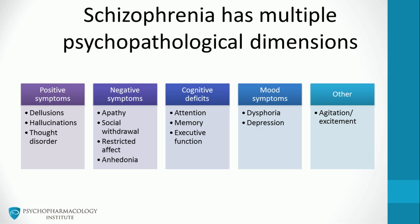Some authors include the psychopathological dimension of agitation and excitement. As you can see, schizophrenia psychopathology is quite complex. We'll see in a minute why negative and cognitive symptoms are relevant to psychopharmacological treatment.